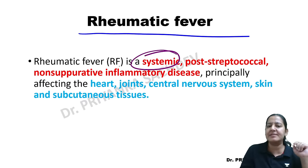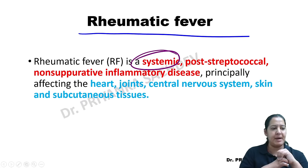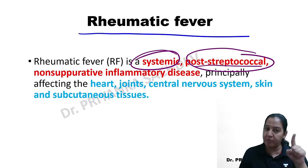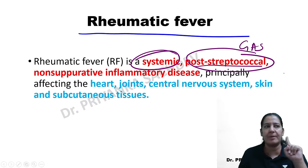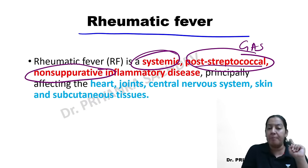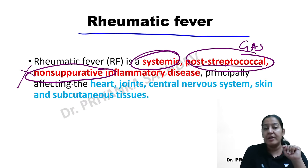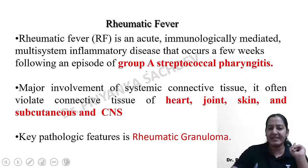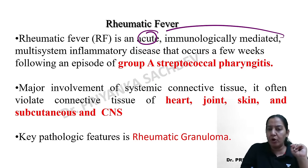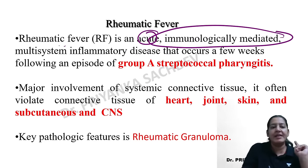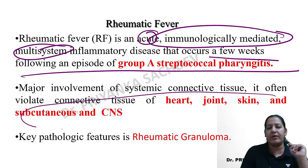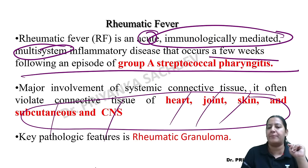Rheumatic fever is a multi-system disease. It is post-streptococcal — it always occurs after Group A beta-streptococcus infection. It is non-suppurative, meaning bacteria do not enter the lesion — there is no pus in any of the five organs. It is immunologically mediated because it is caused by autoantibodies, and it is an acute disease occurring a few weeks after GAS pharyngitis.